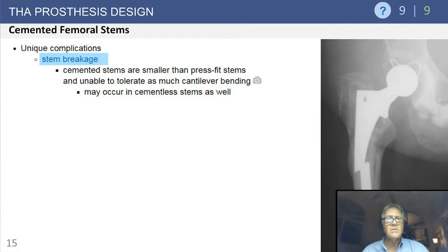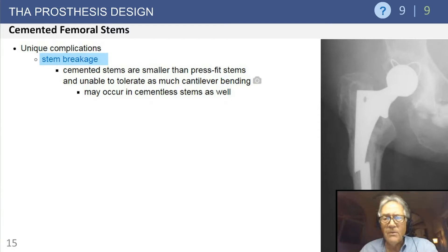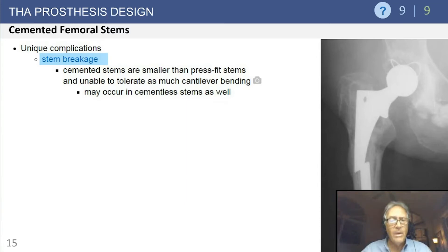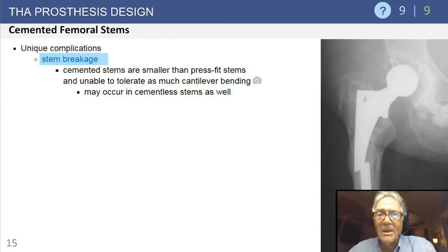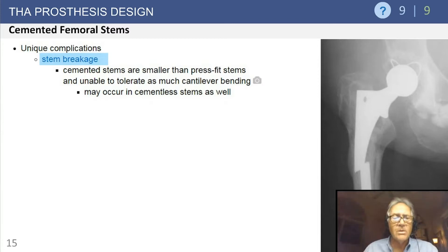Cemented femoral stem breakage can occur, though I can't remember the last time a contemporary cemented stem broke. If a cemented stem breaks, you would lose fixation above — as seen in this radiograph — and the stem pivots distally and breaks in the mid-stem area. Very unusual. However, look carefully at your radiographs. I have seen patients seen by two or three doctors where just a little step-off was visible, then later there was catastrophic failure. Be careful when evaluating a cemented implant with pain — make sure there isn't any fracture.